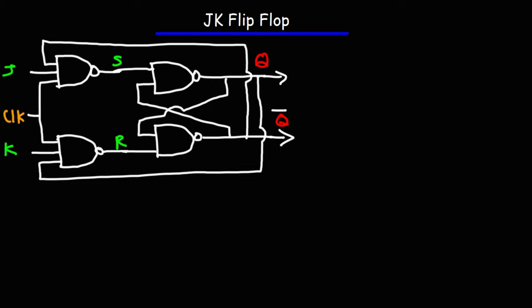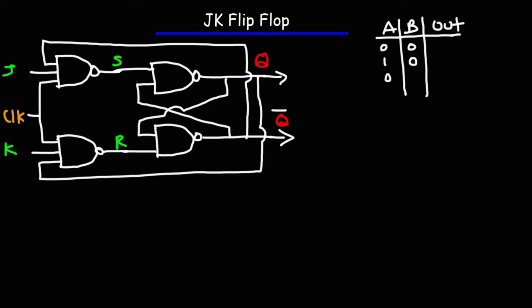Now let's review the truth table for the NAND gate. Recall the truth table for an AND gate — the output is one only if both A and B are on. For the NAND gate it's the reverse: the output is only zero when both A and B are in the on state. So this is the truth table for a two-input NAND gate.